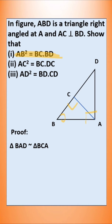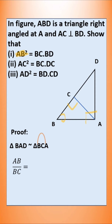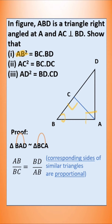We know that in similar triangles, corresponding sides are in proportion. Since we need to prove AB squared, we have to find where AB is in the first triangle — AB by BC, the first two vertices of the second triangle. We have to find AB in the second triangle — the first and last vertices are BD. So BD by AB. Now let us cross multiply: AB squared is equal to BC into BD.